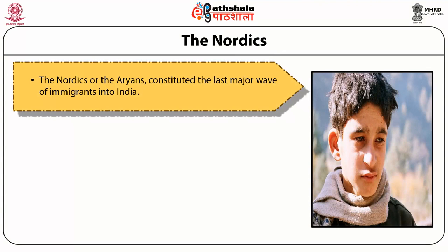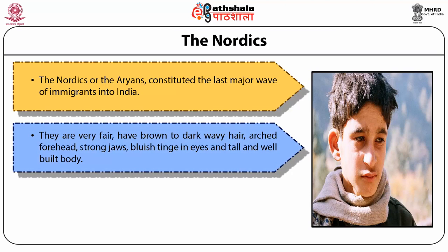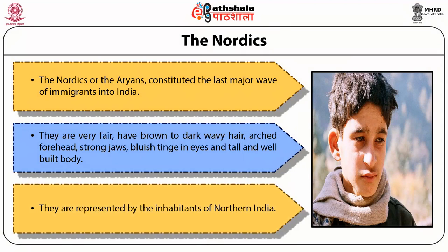The Nordics or Aryans constitute the last major wave of immigrants into India. These are very fair, have brown to dark hair, white arched forehead, strong jaws, eyes with bluish tinge and a tall and well-built body. They are represented by the inhabitants of North India, that is Punjab and Rajasthan.